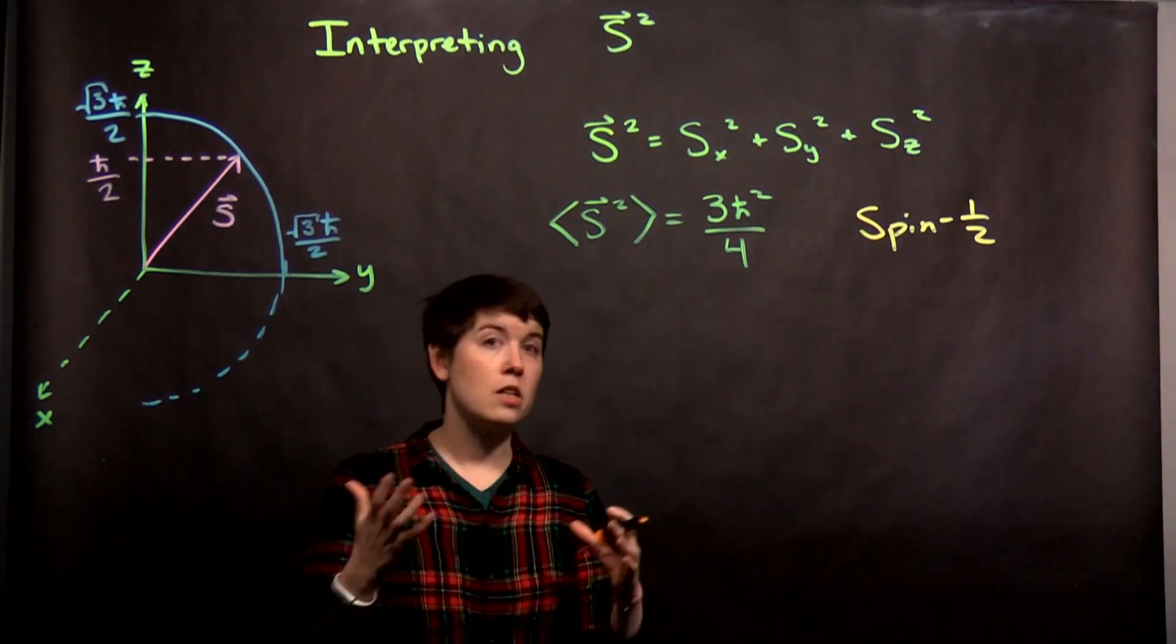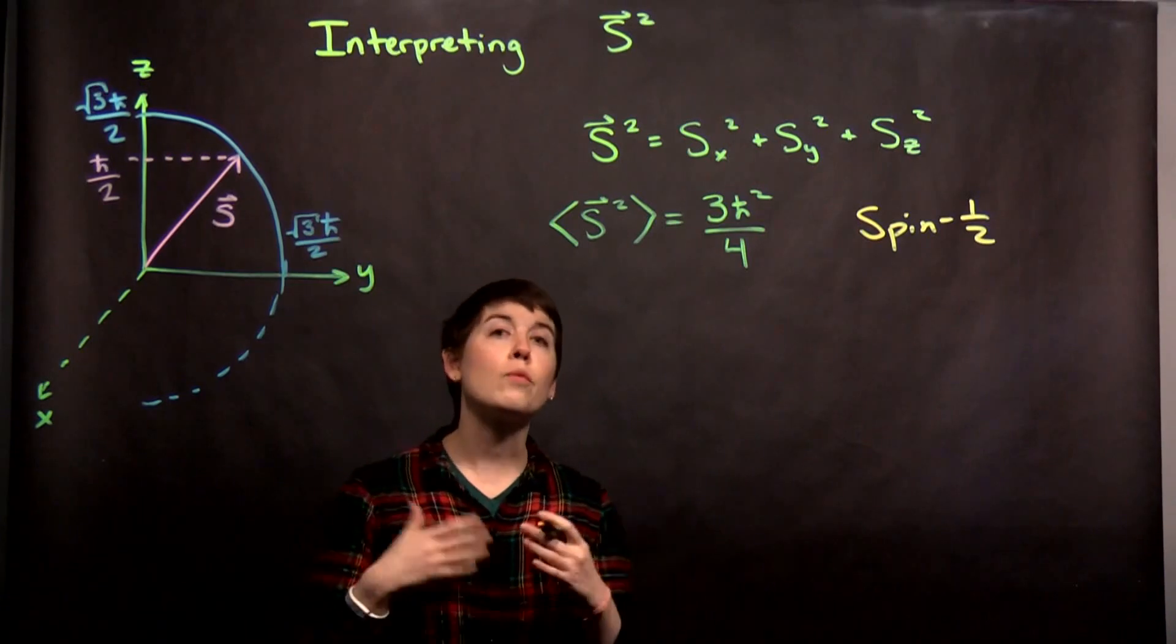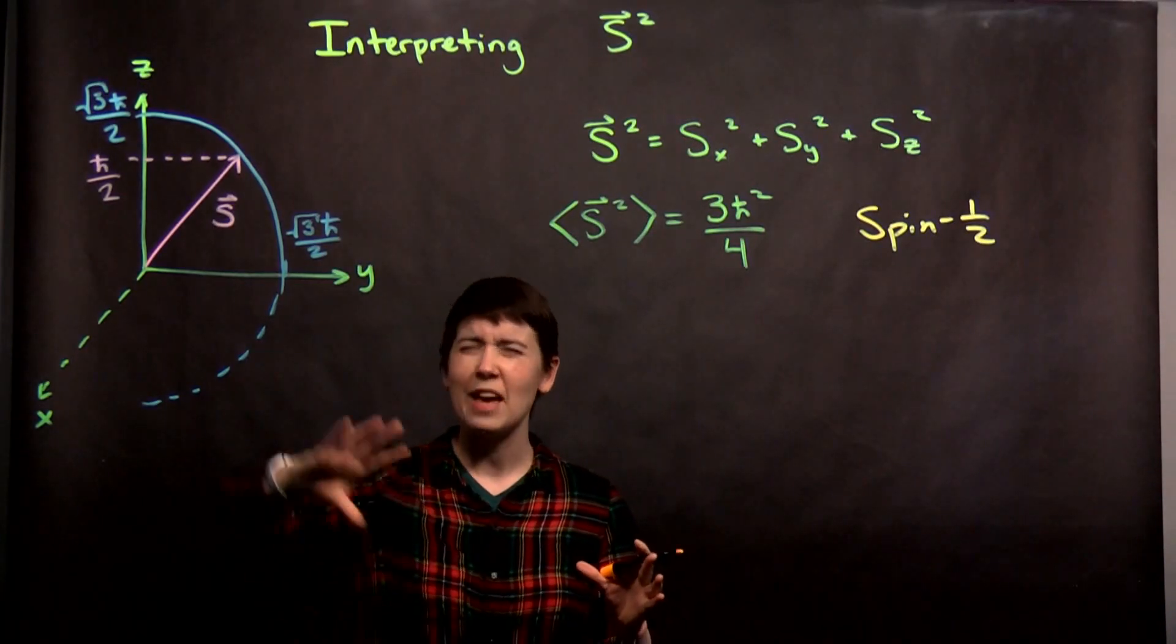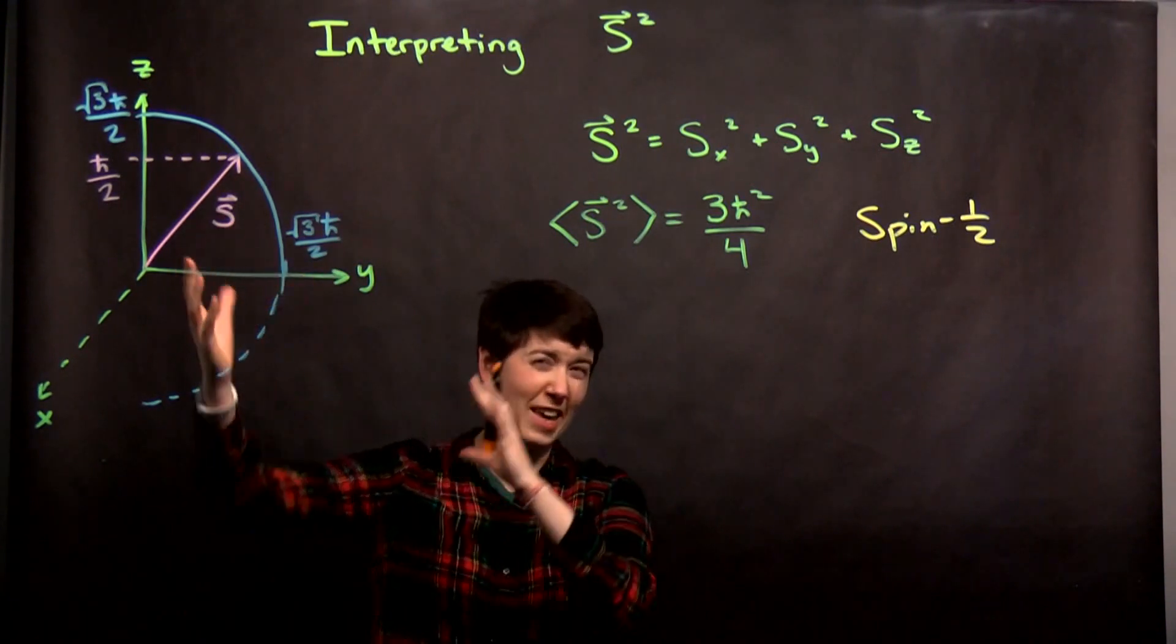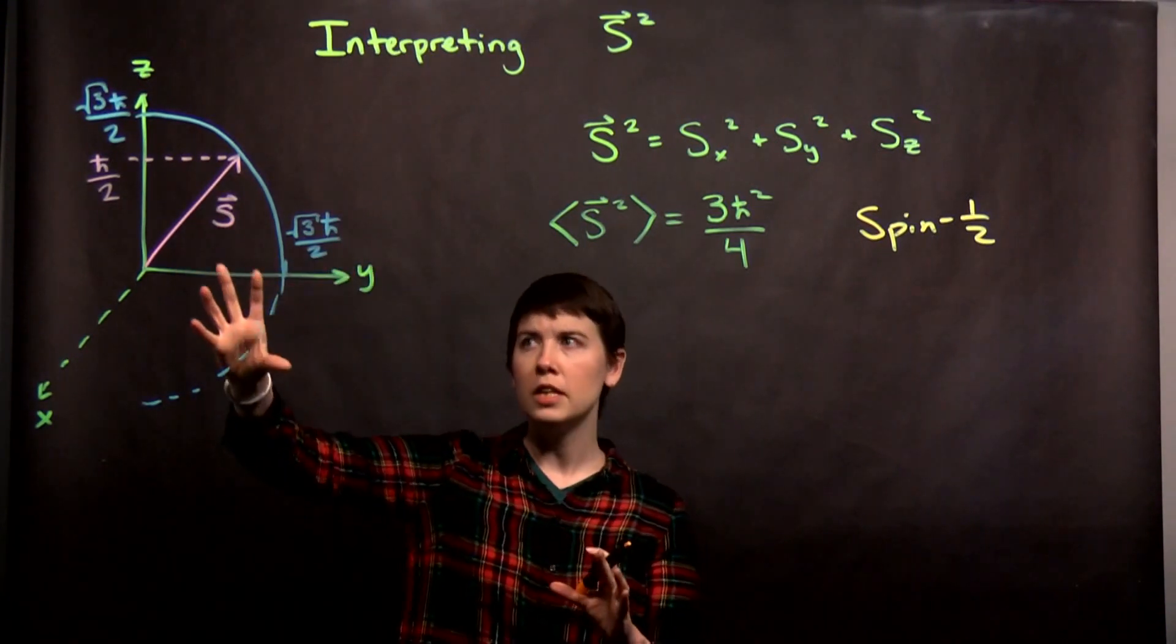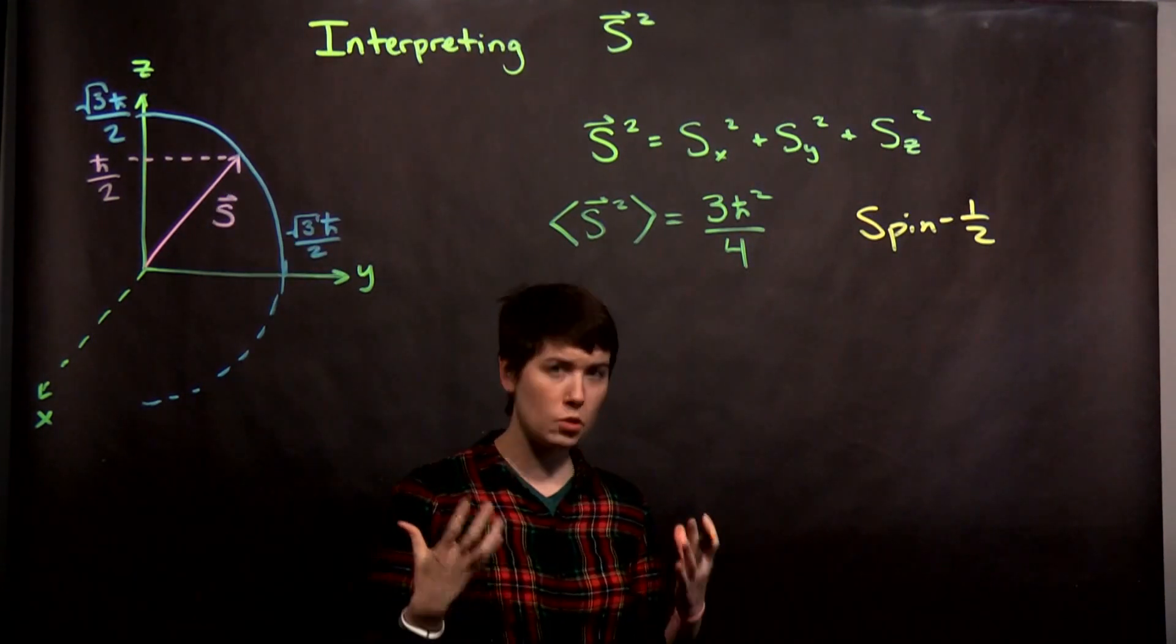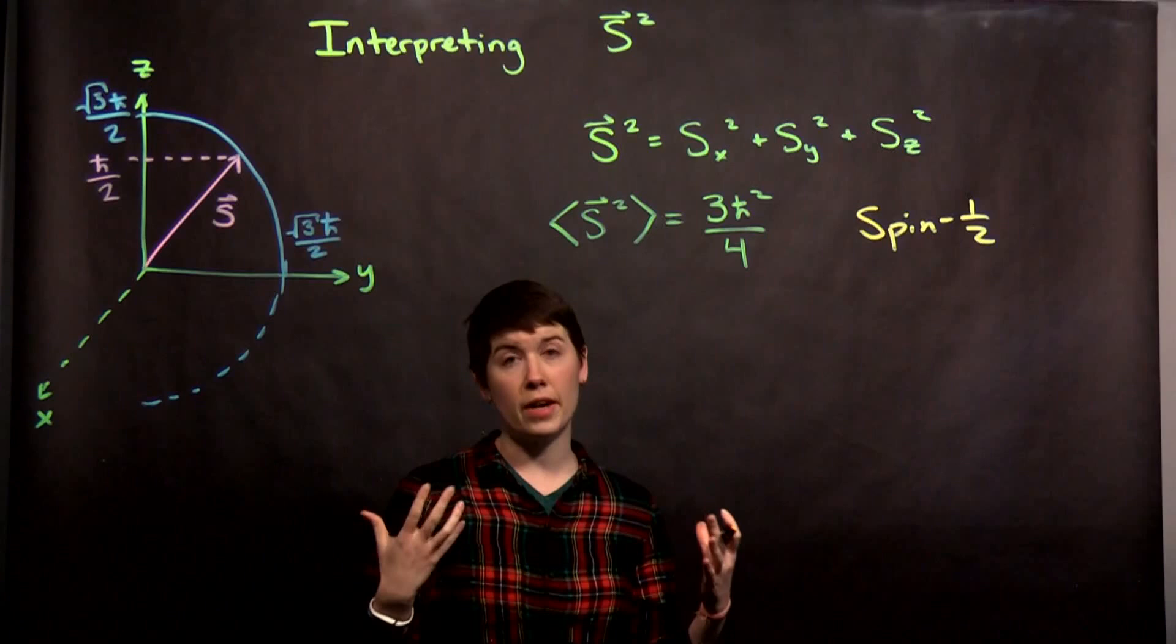So what does it mean in three space if you have a fixed vector length? Well, that would trace out a sphere if you include all possible orientations. And I've attempted to draw it here, but I can't really draw a sphere very well. So I'm just trying to capture part of the sphere here. So we would say that our spin vector lays on that sphere.